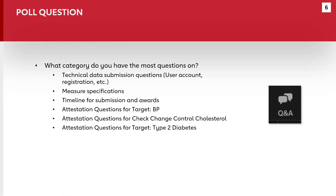We'll start off with a poll. We were curious: which category do you have the most questions on? Is it our technical data submission questions, user account registration, measure specifications, timeline for submission and awards, the attestation questions for Target BP, for Check Change Control Cholesterol, or for Target Type 2 Diabetes?